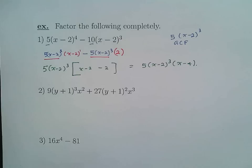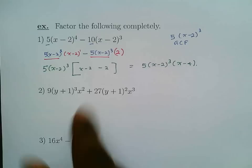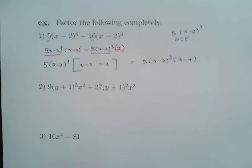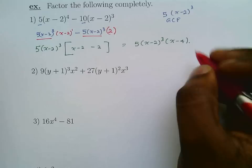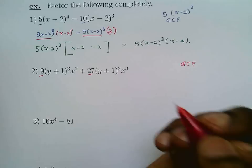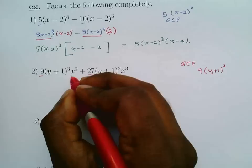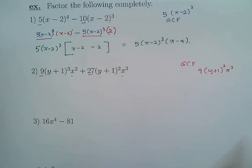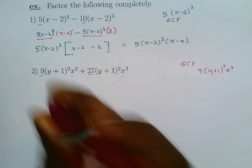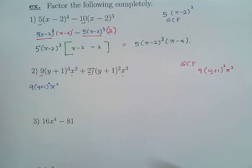It helps to write the GCF on the side first, then write each term with GCF and what's remaining, so the next step is just taking the GCF out. For the next example, the GCF of 9 and 27 is 9. For (y + 1)³ and (y + 1)², the least exponent is (y + 1)². For x² and x³, the least exponent is x². So the GCF is 9(y + 1)²x².